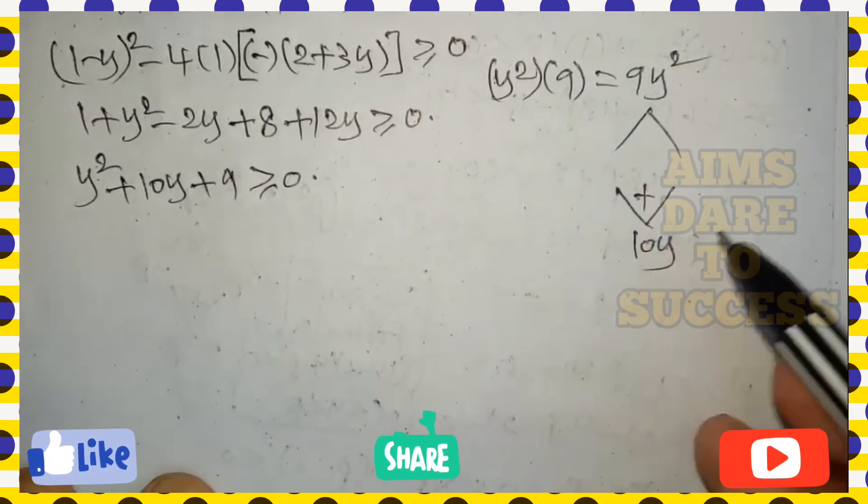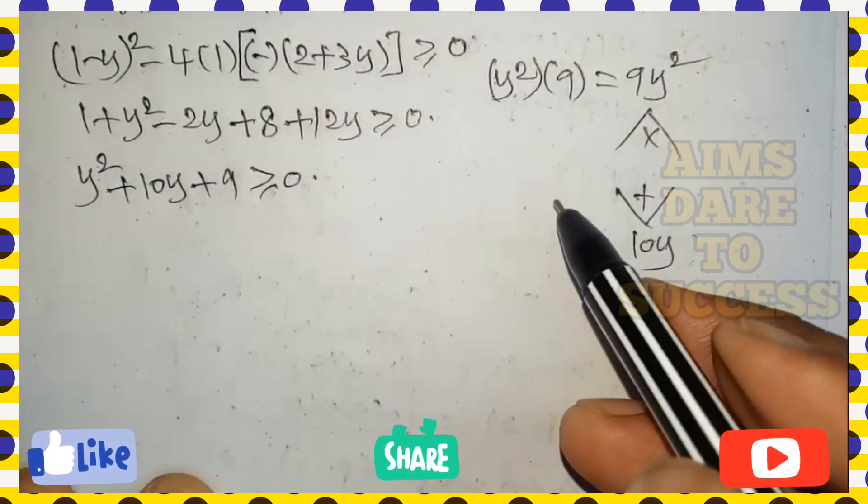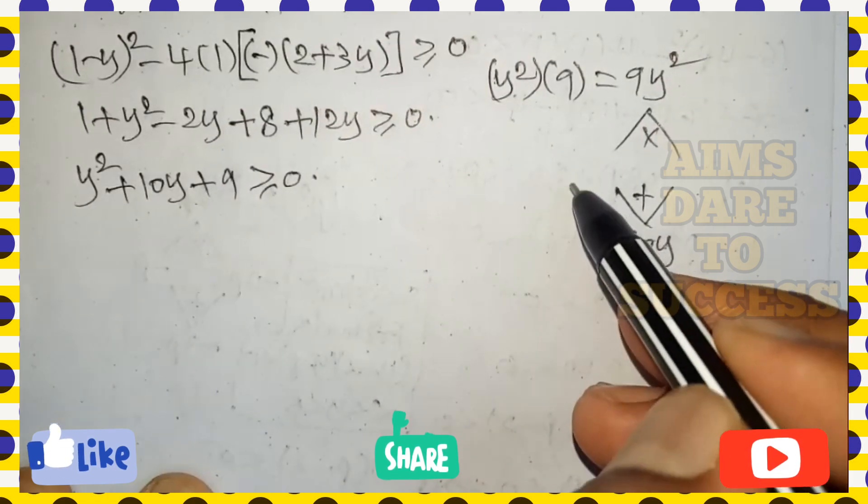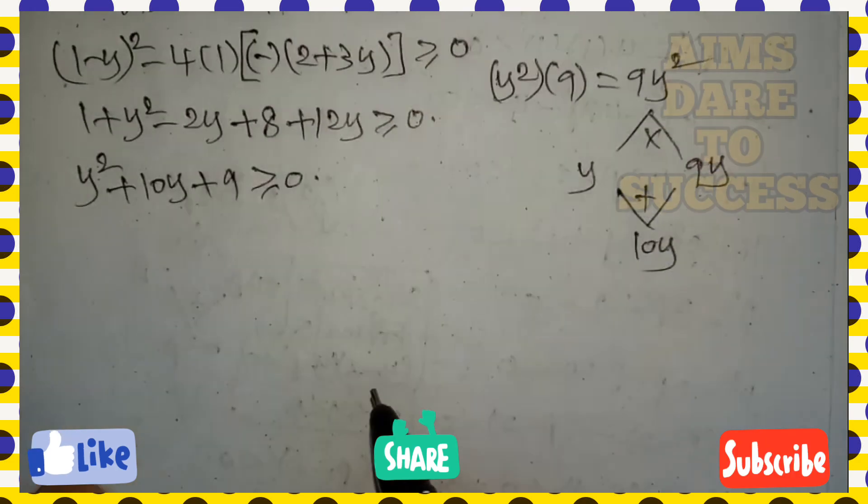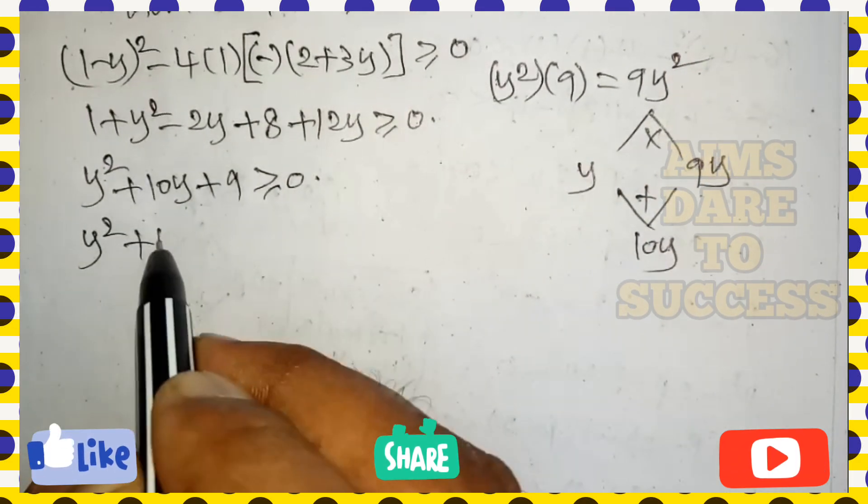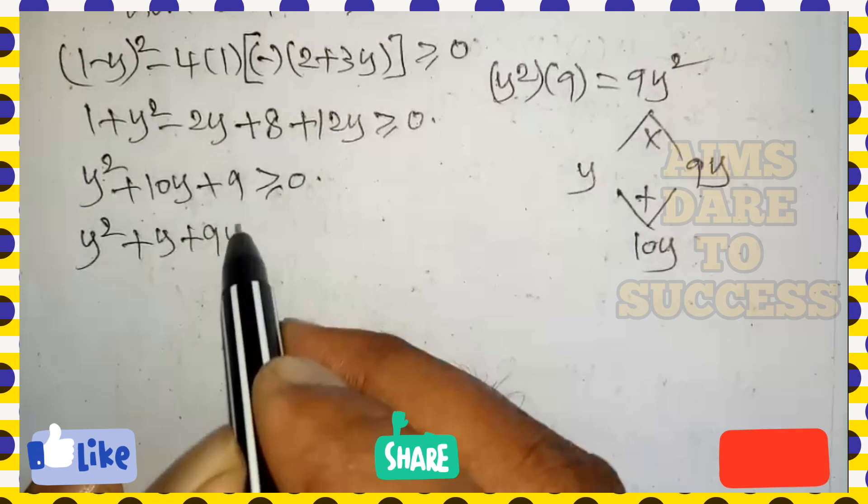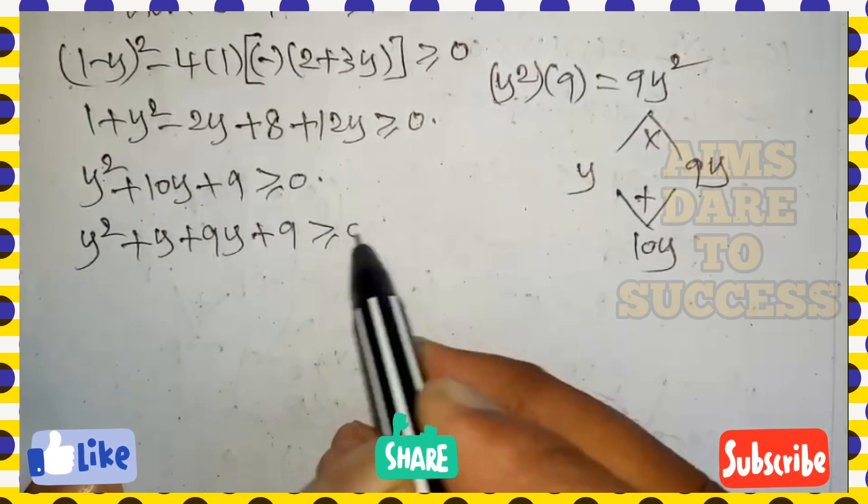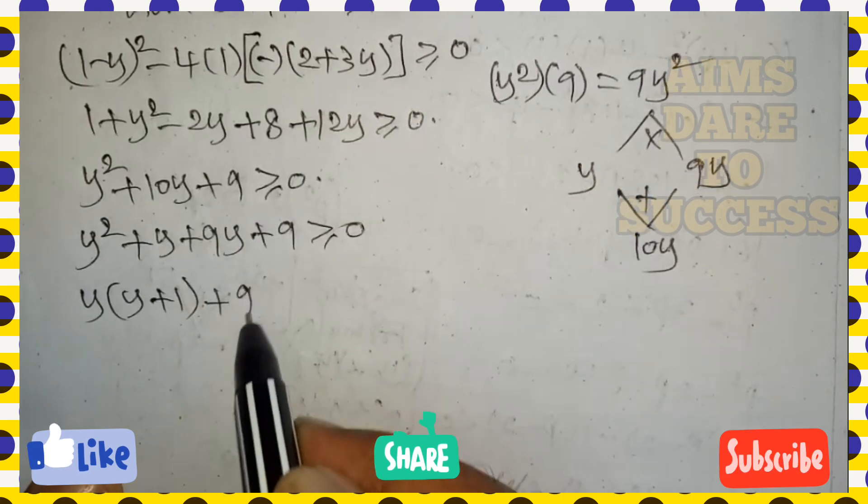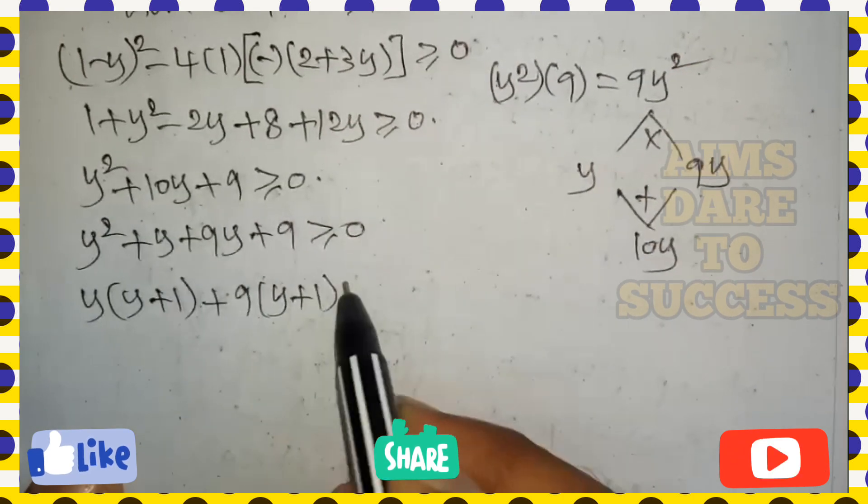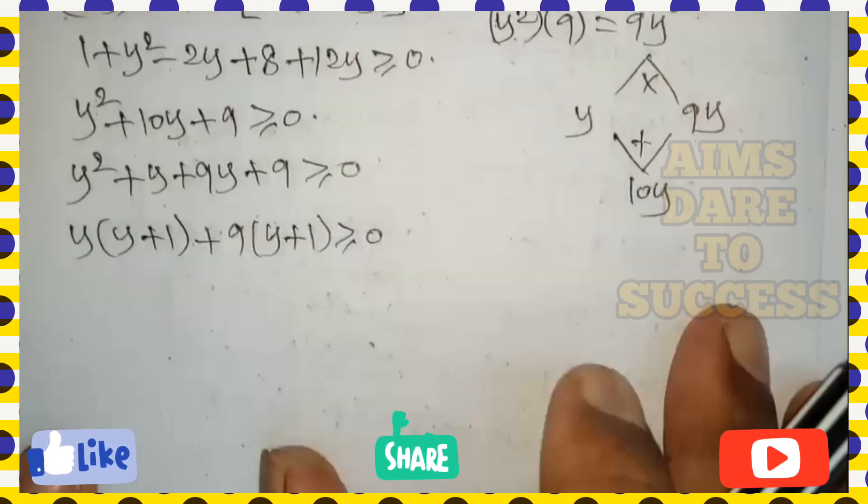So first number into last number: y square into 9 is 9y square, and middle value 10y. Add, then 10y; multiply, then 9y square. y plus 9y is 10y, y into 9y is 9y square. So continue: y square plus y plus 9y plus 9 greater than or equal to 0. y is common, remaining value y plus 1, plus 9 is common, y plus 1, greater than or equal to 0.